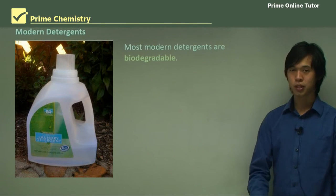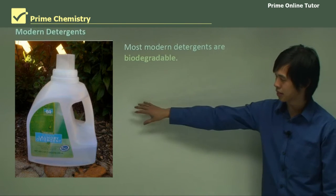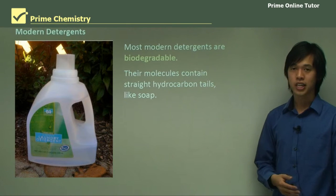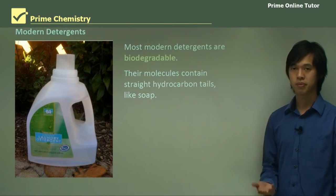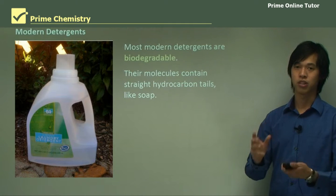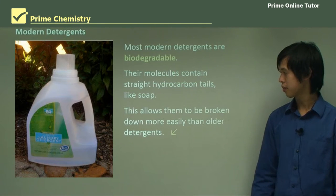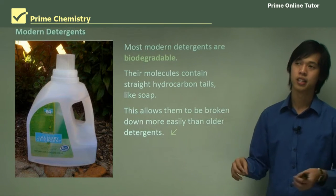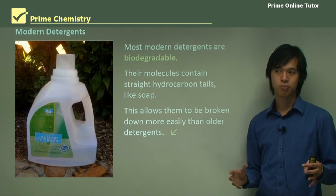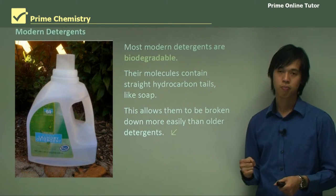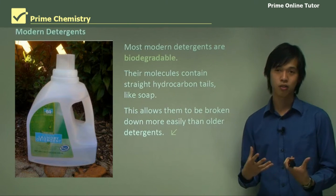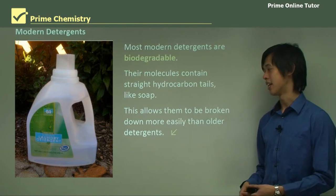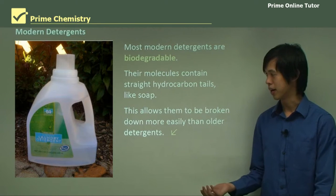Most modern detergents are biodegradable. Their molecules contain straight hydrocarbon chains, just like soap — similar to fatty acid soap or natural organic soap. This allows them to be broken down more easily than older detergents because they're straight-chained. If you think about it, straight chains are usually easier to break down — similar to how our human body tends to break down saturated fats more easily than more complex fats.